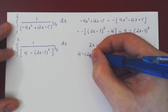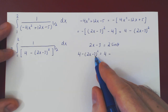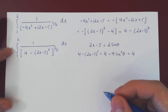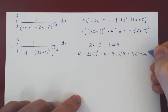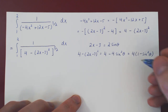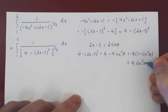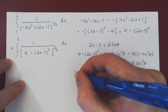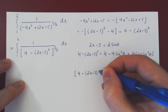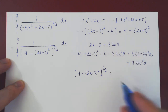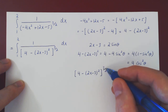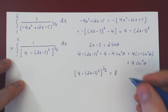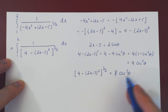So 4 minus (2x − 3)² becomes 4 minus 4sin²θ — factoring out the 4, we have 4 times (1 − sin²θ), and of course 1 − sin²θ is cos²θ. This is now the interior of our denominator. Taking the power of 3/2: 4 to the 3/2 gives 8 (since √4 = 2 and 2³ = 8), and (cos²θ)^(3/2) gives cos³θ. So the simplified denominator is 8cos³θ.